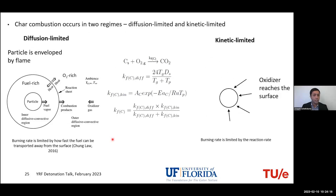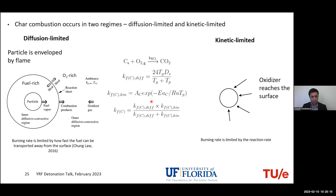For surface chemistry, there are two types of regimes. In the diffusion-limited regime, the particle is at high enough temperature that chemical kinetics are fast, but the rate is limited by oxygen diffusing through the film around the particle surface. In the kinetics-limited regime, which occurs at lower temperatures, there is enough oxygen at the surface but the reaction rate is limited by how fast the kinetics are. In general, a combination of these two methods applies, giving the final overall reaction rate.